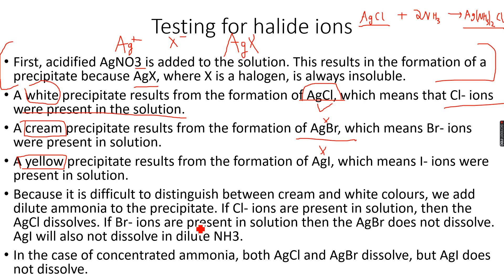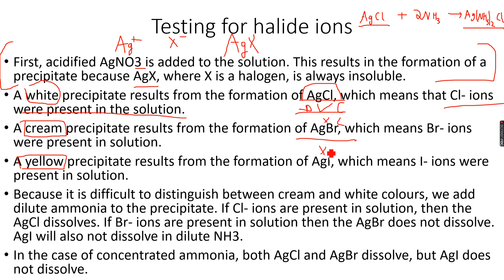When you add concentrated ammonia, even AgBr will dissolve. AgBr does not dissolve in dilute ammonia but it dissolves in concentrated ammonia. AgCl will dissolve in both dilute and concentrated ammonia. AgBr only dissolves in concentrated ammonia, and AgI does not dissolve in either dilute or concentrated ammonia.